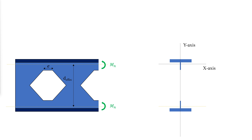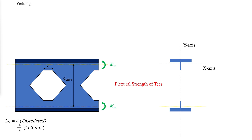The flexural strength of the top and bottom T sections must be determined and compared to the required flexural strength to support the Vierendeel design moment, with an unbraced length equal to the length of the T section. The nominal flexural strength is the lowest value obtained according to the limit states of yielding, lateral torsional buckling, flange local buckling, and local buckling of T stems.